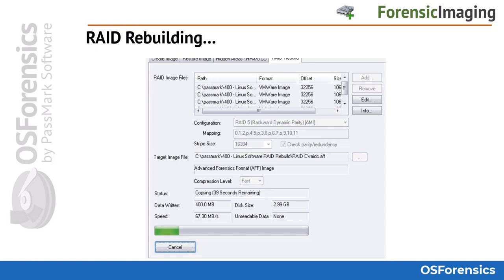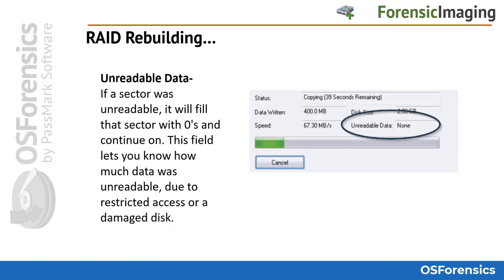The stripe size setting sets the size of the smallest unit of contiguous data addressable in a RAID array. In order to rebuild the logical image, the stripe size along with the disk ordering specified by the RAID configuration determines how the source disk images are striped to form the logical image. If the Check Parity/Redundancy option is checked, the parity blocks, if present, are checked to verify the integrity of the RAID array. If a sector is unreadable, it will fill that sector with zeros and continue — this field indicates how much data was unreadable due to restricted access or a damaged disk.